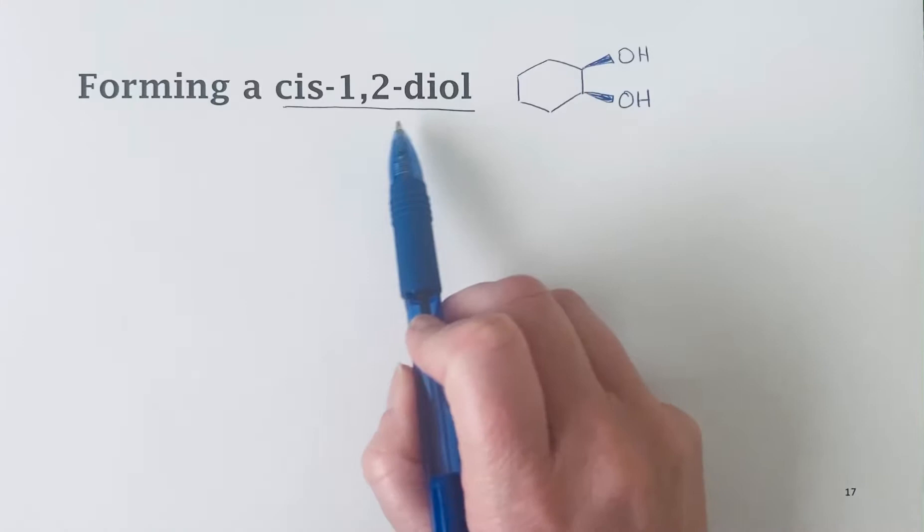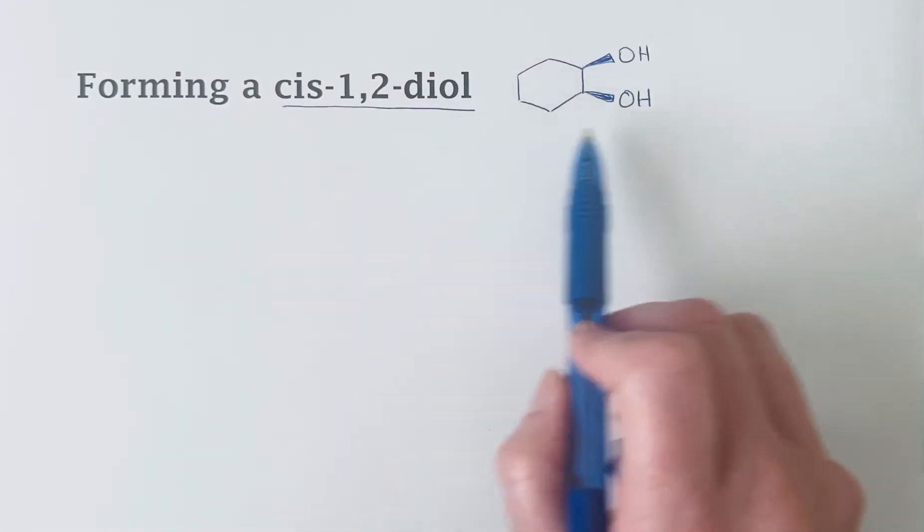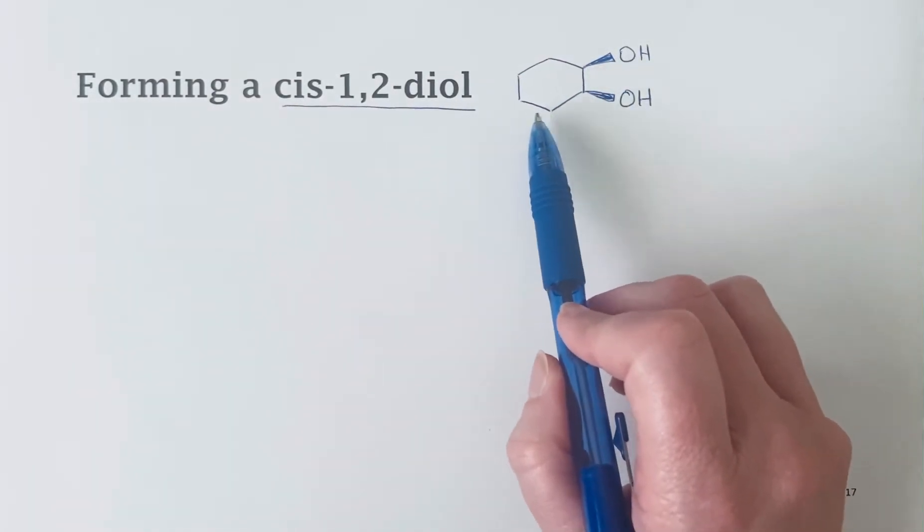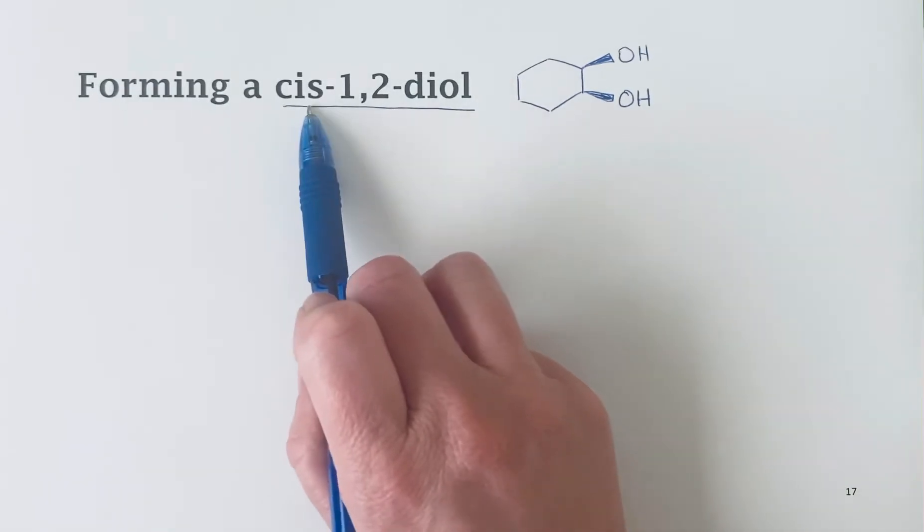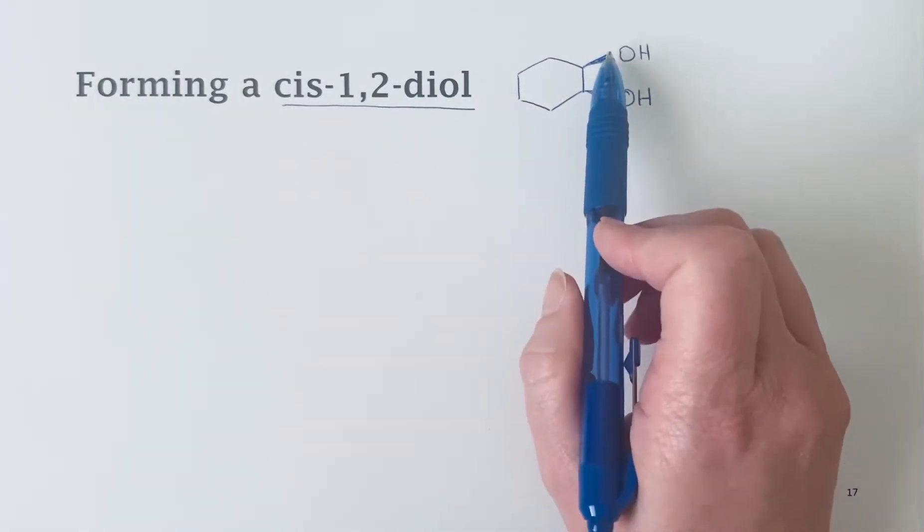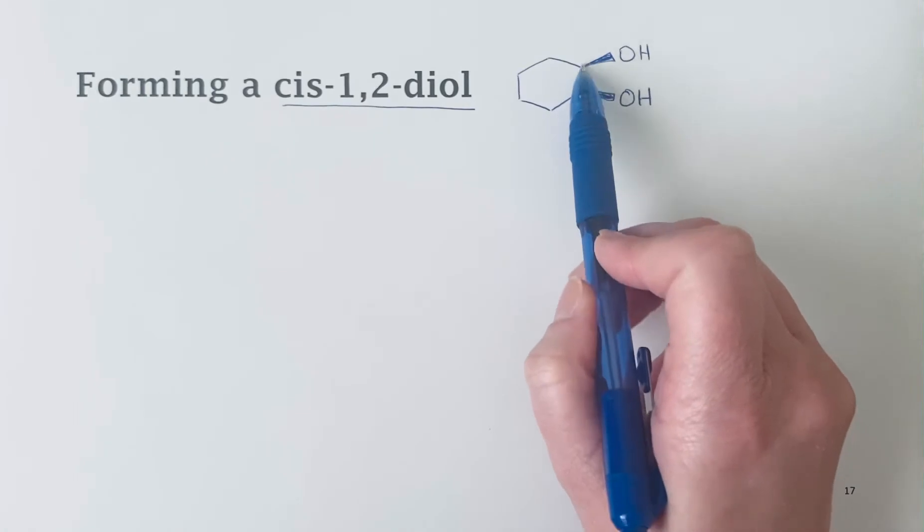Forming a cis-1,2-diol. The structure shown here is an example of a cis-1,2-diol. Cis because both of the bonds are facing in the same direction, 1,2 because they're on adjacent carbons, and diol because these groups are both alcohols.